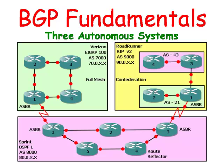We didn't have to use 7 to indicate Verizon, but it makes it easier to see when we look it up in the routing table. For Sprint, we're using OSPF with an Autonomous System of 8000 and an IP address of 80.0. For Roadrunner, we're using the RIP protocol, an Autonomous System of 9000, with 90.0 as an IP address.